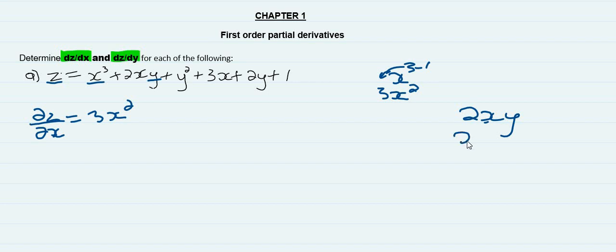You take that, you bring it down. Y and the constant you keep as 2Y. You're left with X. And then your X is to the power of 1. Therefore when you differentiate, you get 1.